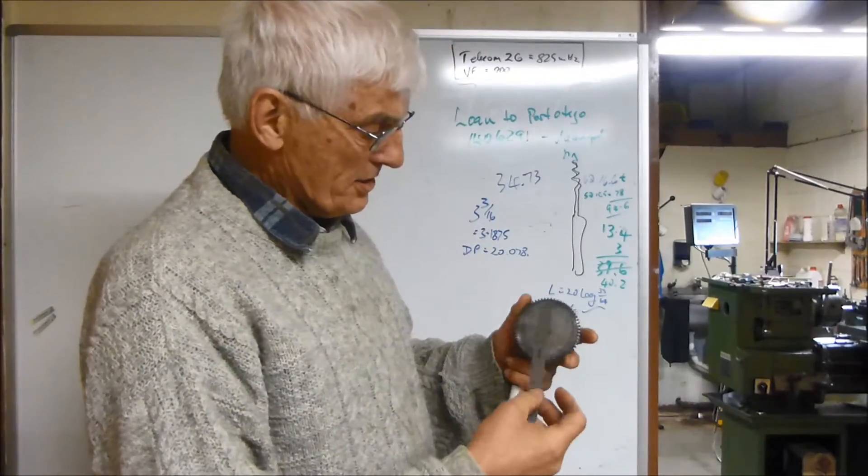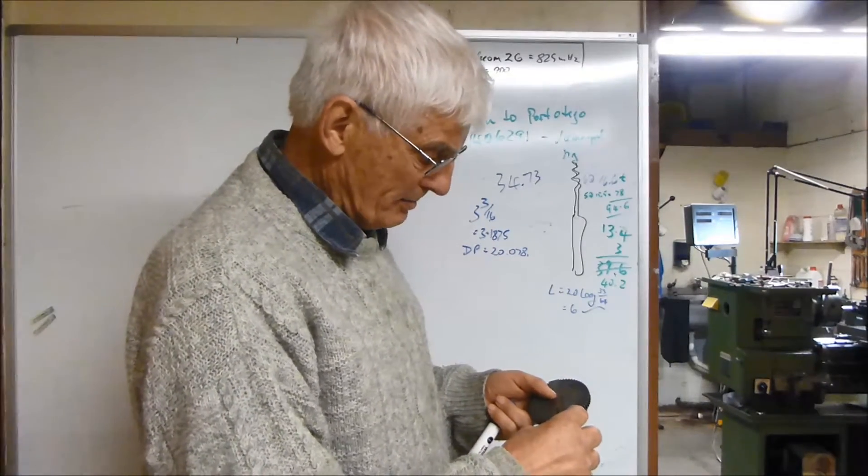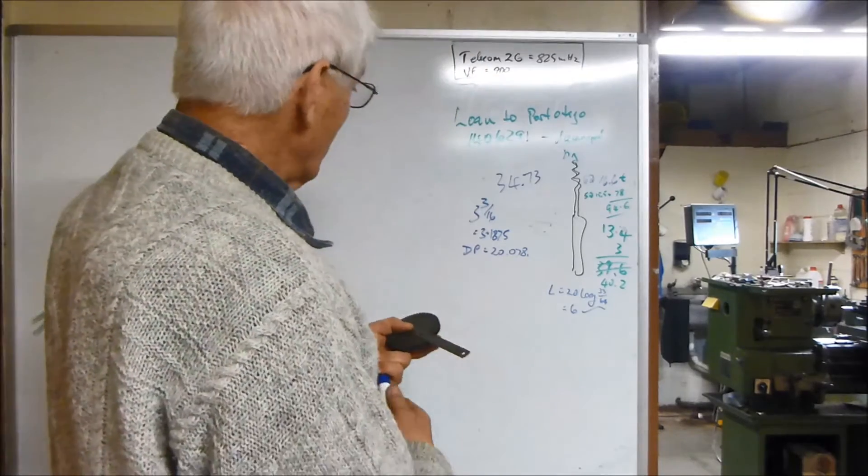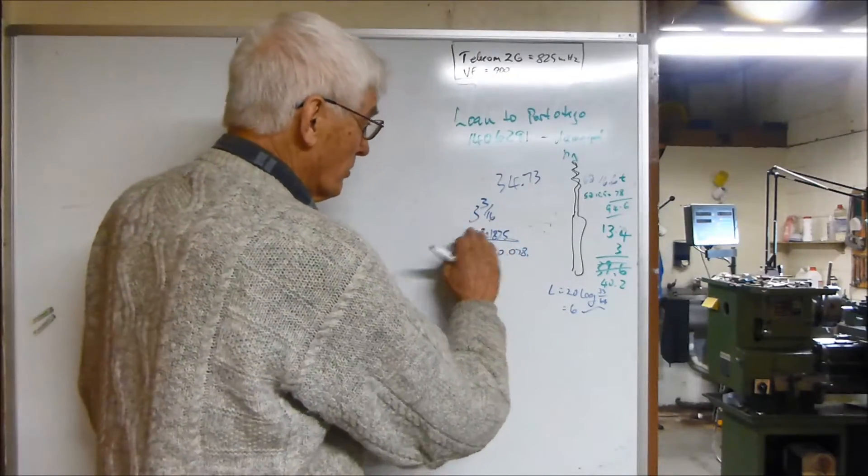This is the large gear from the mill and it has an outside diameter of 3 and 3 sixteenths, which is 3.1875.